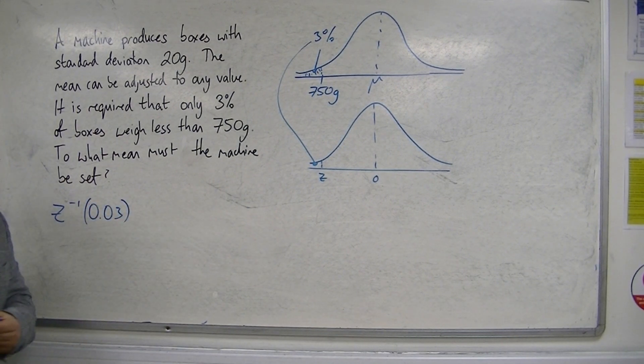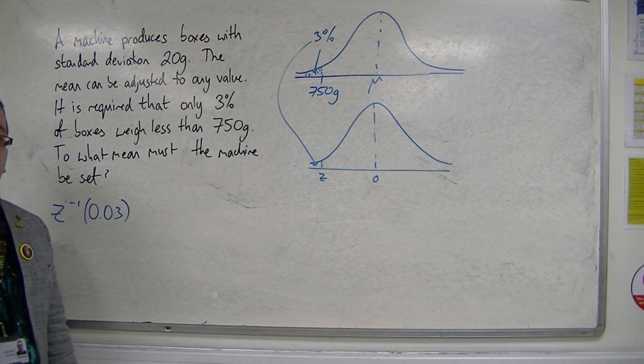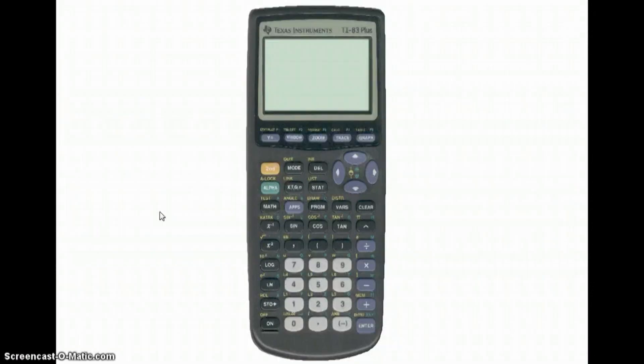Which we now do on the calculator. We want the bottom 3%, so 3% corresponds to 0.03 in decimal. We want to find the inverse norm of 0.03. So we go into the distributions: 2nd, VARS, down to inverse norm, press enter.